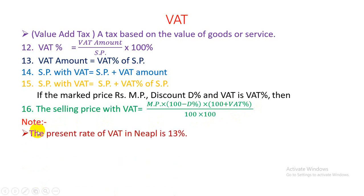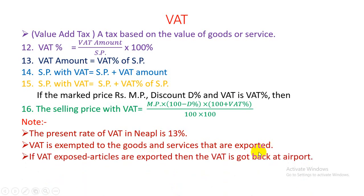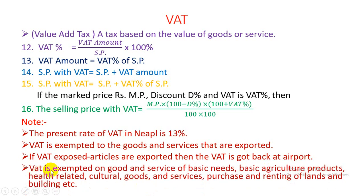Note: the present rate of VAT in Nepal is 13%. VAT is not charged on goods and services that are exported — if VAT-exposed articles are exported, the VAT is refunded at the airport. VAT is also not charged on goods and services of basic needs, basic agriculture products, health-related and cultural goods and services, and purchases and renting of land and buildings.